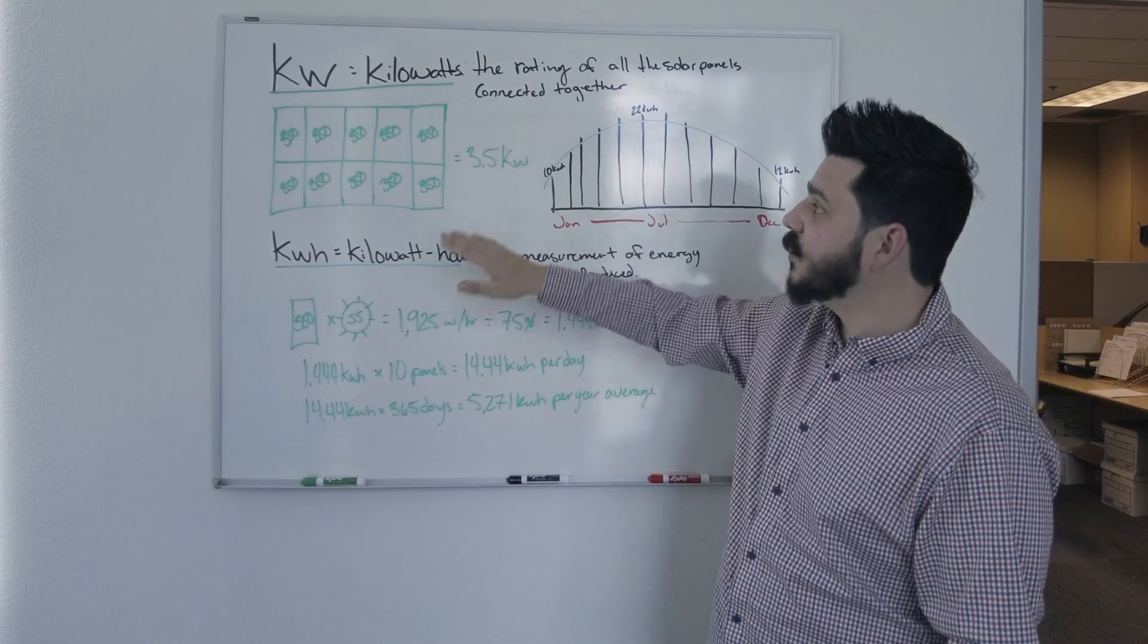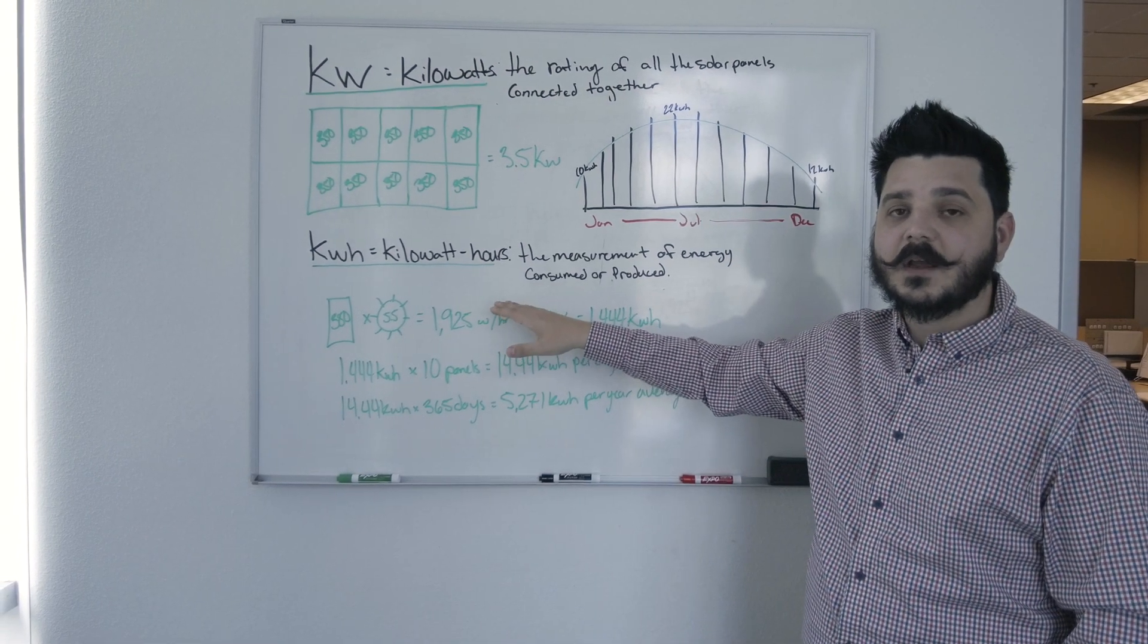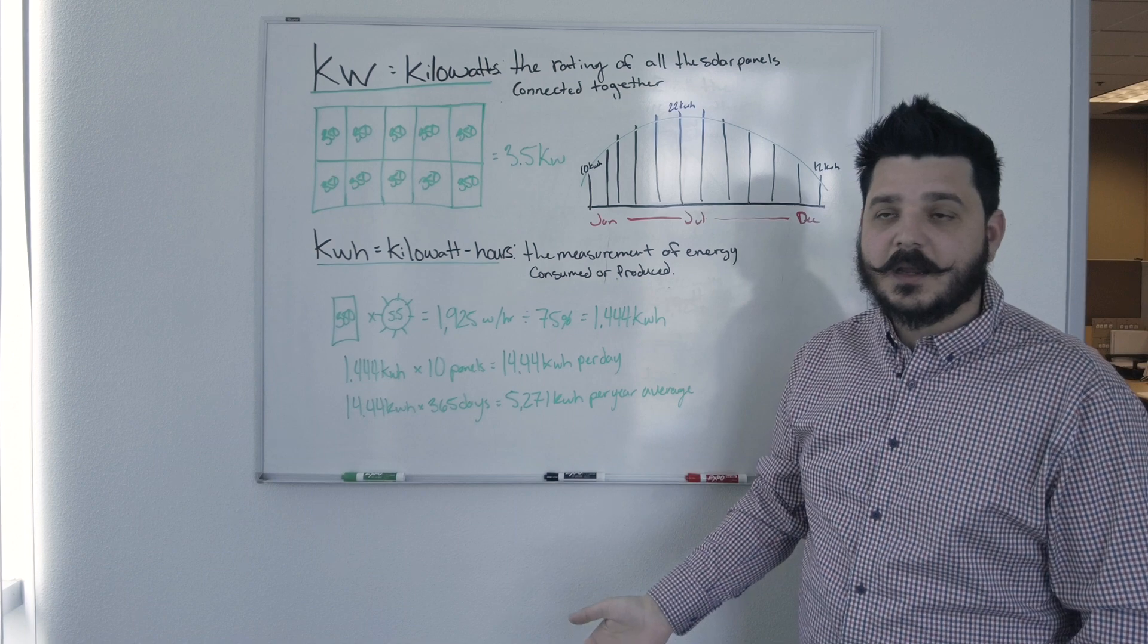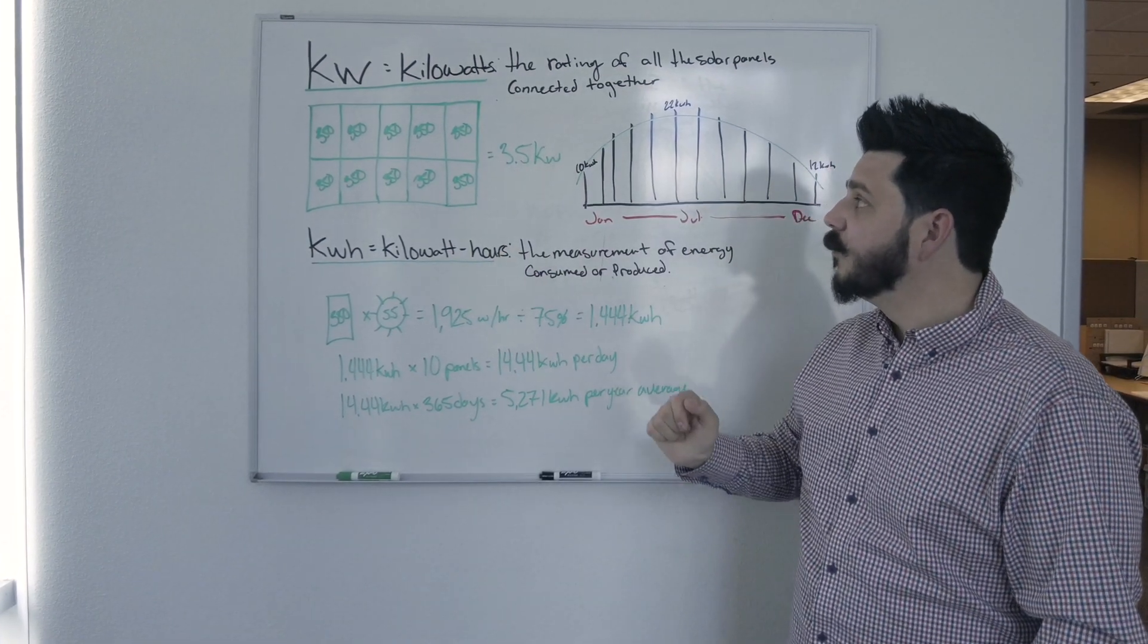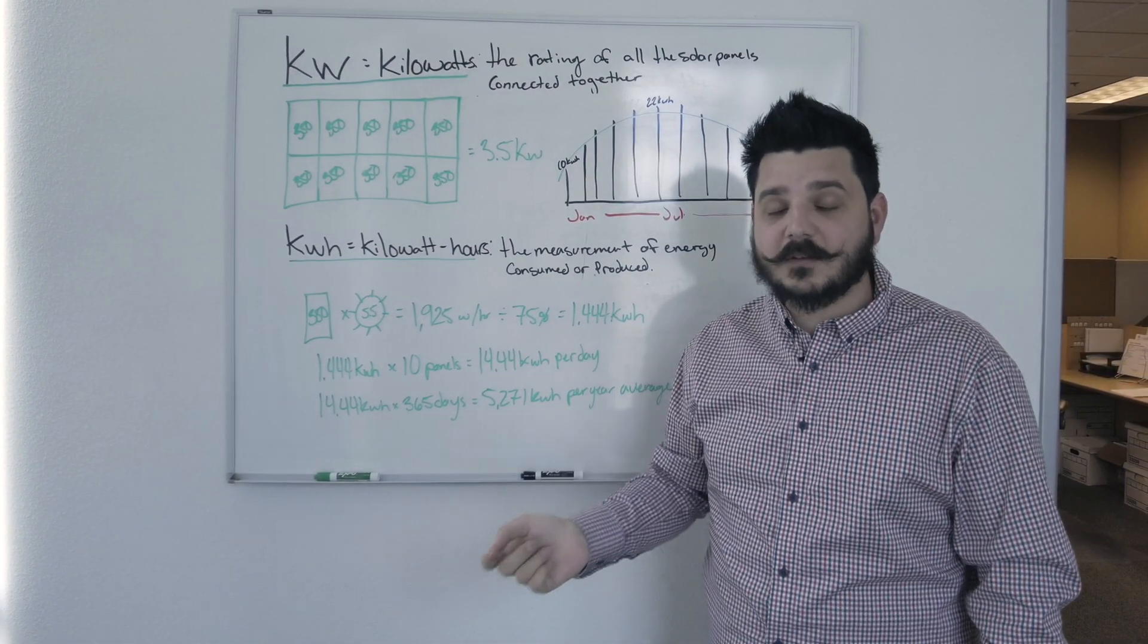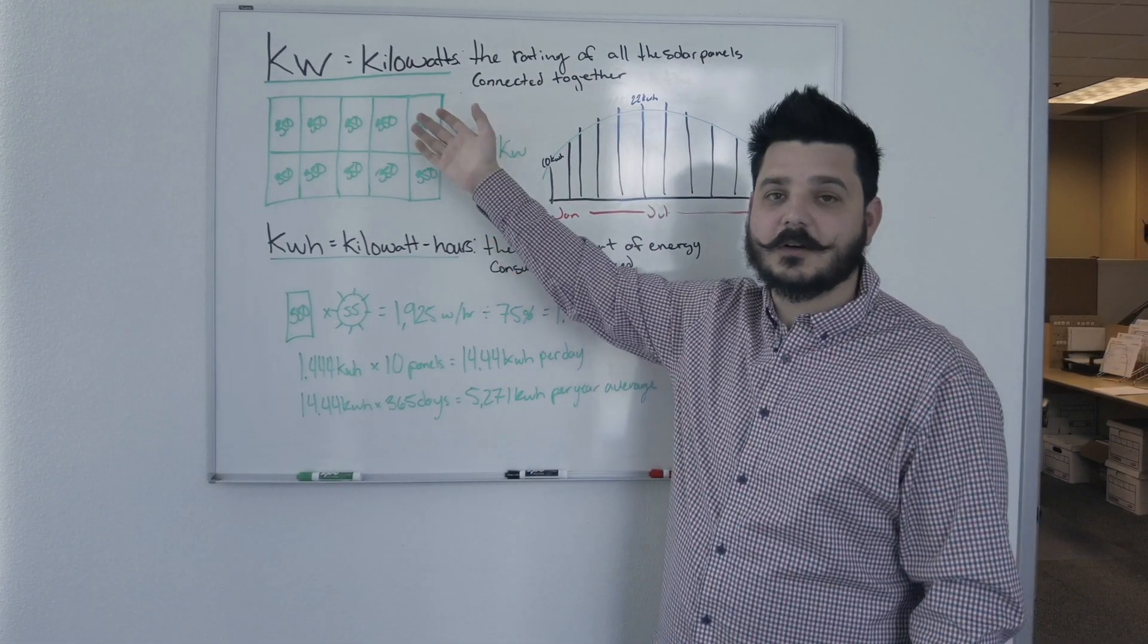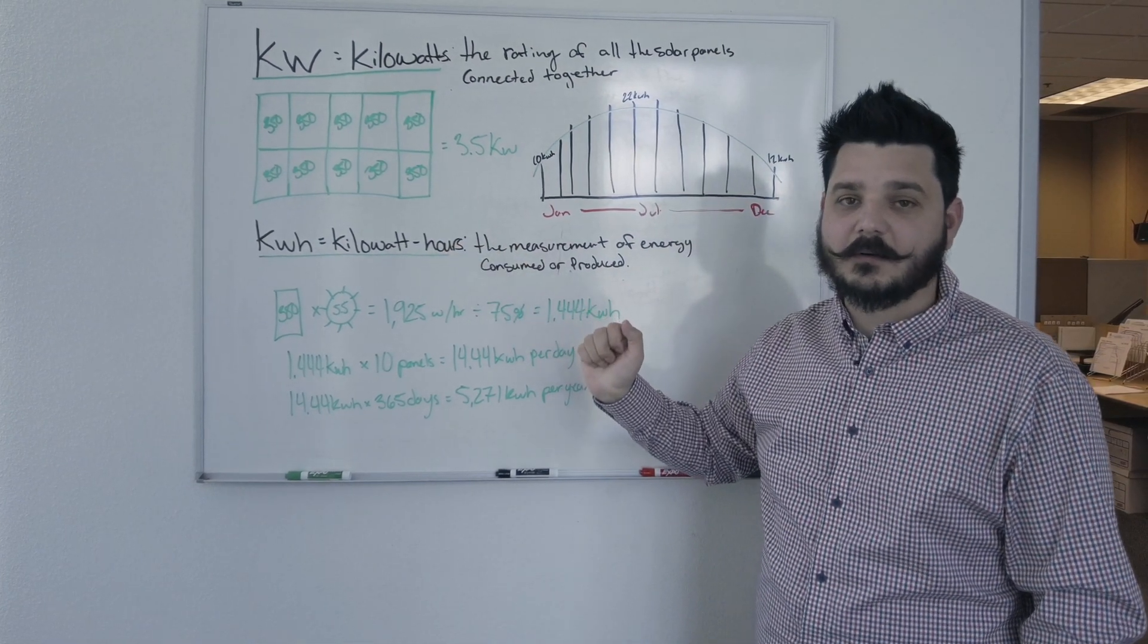These are the terms people get really mixed up often when we're asking them about how much power they consume from the utility company. They give us a kilowatt rating or they give us kilowatt hours. If you say you need a 6 kilowatt system, but really you need to produce 6,000 kilowatt hours—that's two completely different systems. You don't need a 6 kilowatt system to produce 6,000 kilowatt hours.